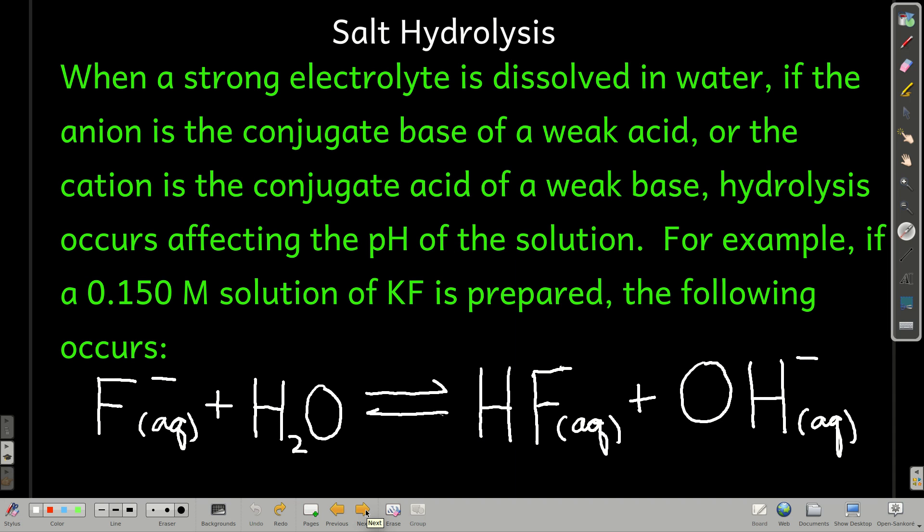So how can this happen? Well, it happens through what's called salt hydrolysis. And what this means is that if you take an ionic compound, a salt, that's a strong electrolyte, and you dissolve it into water, if the anion part of that ionic compound is the conjugate base of a weak acid, or if the cation is the conjugate acid of a weak base, then you get what's called hydrolysis, and hydrolysis will affect the pH.